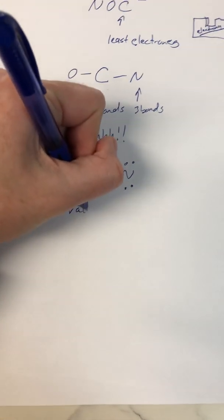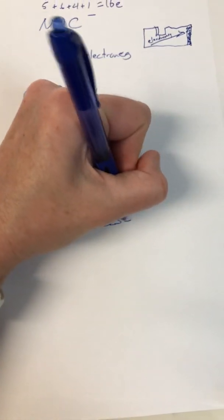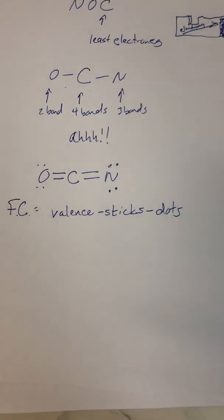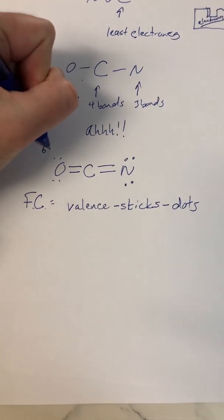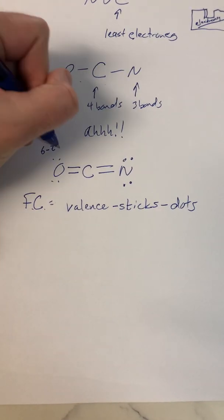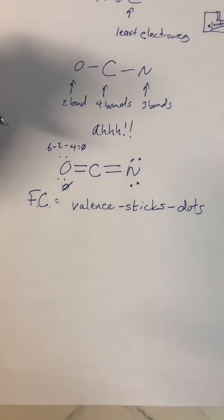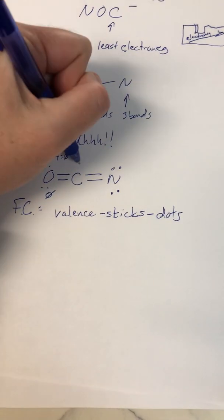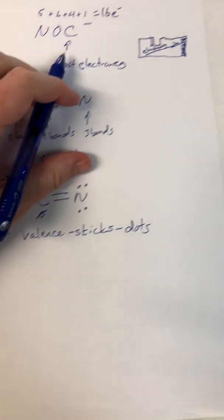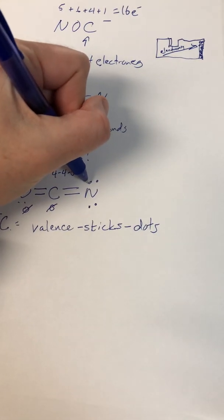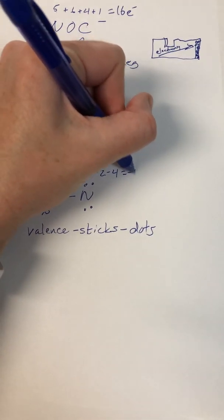Formal charge equals the valence electrons that atom has, minus sticks, minus dots. For oxygen: 6 valence electrons minus 2 sticks minus 4 dots equals zero formal charge. For carbon: 4 valence electrons minus 4 sticks minus 0 dots equals zero formal charge.